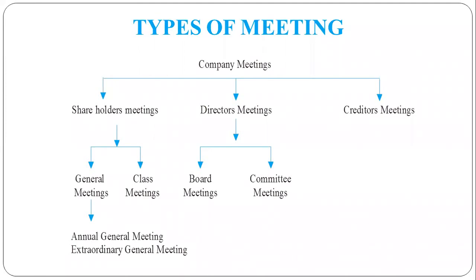Company Meeting Part 1 के अंदर, Company Meeting के रिलेटेड कुछ concepts जो थे वो हम लोगने detail में पढ़े. अभी Company Meeting Part 2 के अंदर हम लोगों को अलग-अलग type के meeting के बारे में पढ़ना है. Company Meeting को broadly तीन पार्ट में divide किया जाता है: एक होता है Shareholders Meeting, दूसरा होता है Directors Meeting, और थर्ड है Creditors Meeting. फिर Shareholders Meeting को दो पार्ट में divide किया जा सकता है - एक होता है General Meeting और दूसरा होता है Class Meeting. और General Meeting को फिर divide किया जाता है Annual General Meeting और Extraordinary General Meeting.